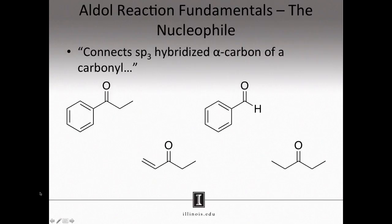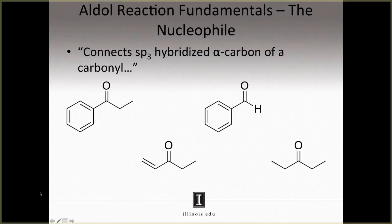Here are four carbonyl structures. Let us look at the structure in the upper left. An alpha carbon is simply a carbon atom that is directly attached to a carbonyl. So this carbon here is an alpha carbon, and so is this carbon here on the other side. If you go through the remaining structures, you can quickly label these as alpha carbons, because they are all directly attached to carbonyls.